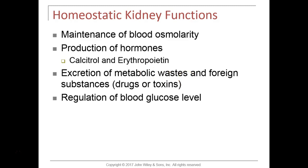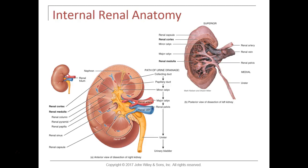The kidneys regulate the concentration of solutes in the blood, called osmolarity. They produce calcitriol — covered in the endocrine chapter — and erythropoietin, covered in the blood chapter. The kidneys also excrete metabolic waste and foreign substances like certain drugs and toxins out in urine, and blood glucose level is also regulated by the kidney.